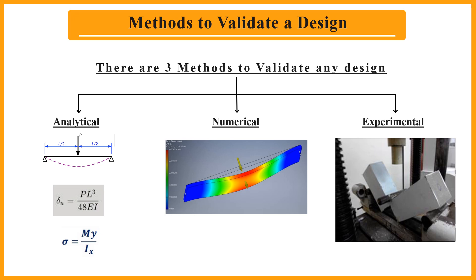The third method is experimental. This method involves testing physical prototypes. It's the most reliable since it considers real-world errors, but it's costly and time consuming. For example, wind tunnel testing for an airplane wing design is an experimental approach.